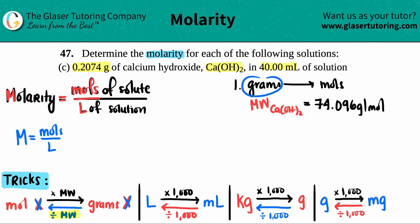To go from grams to moles, divide by the molecular weight. They gave us 0.2074 grams, so I'll take 0.2074 and divide it by 74.096. What do we get? 0.2074 divided by the molecular weight equals 0.002799.